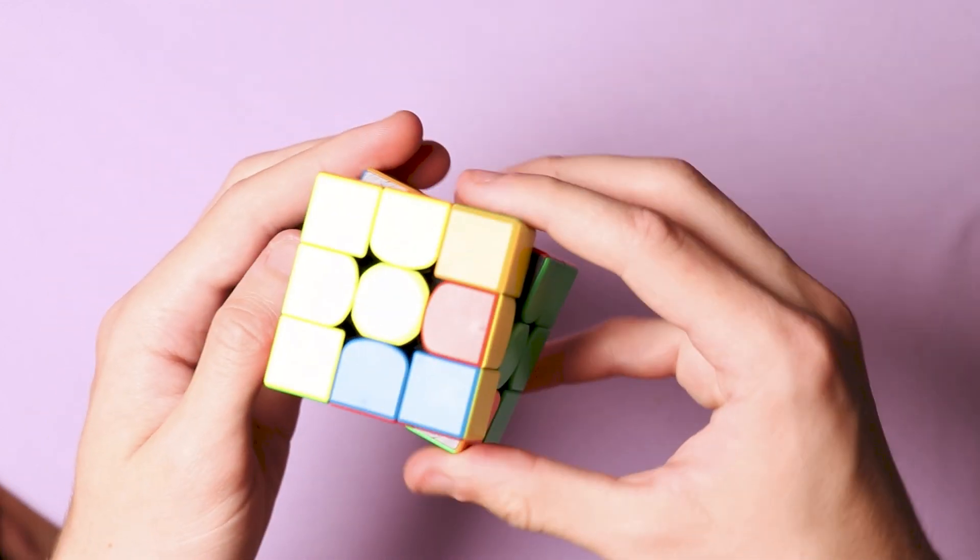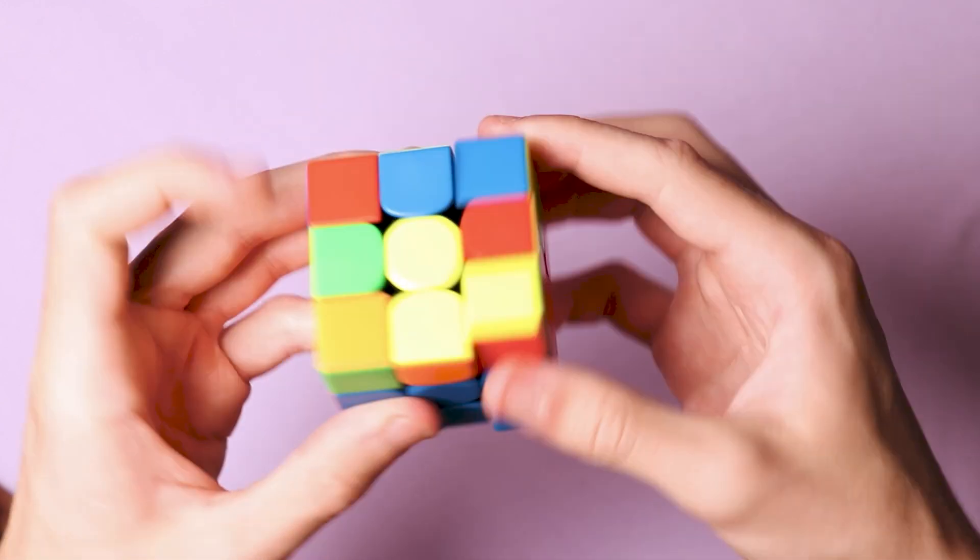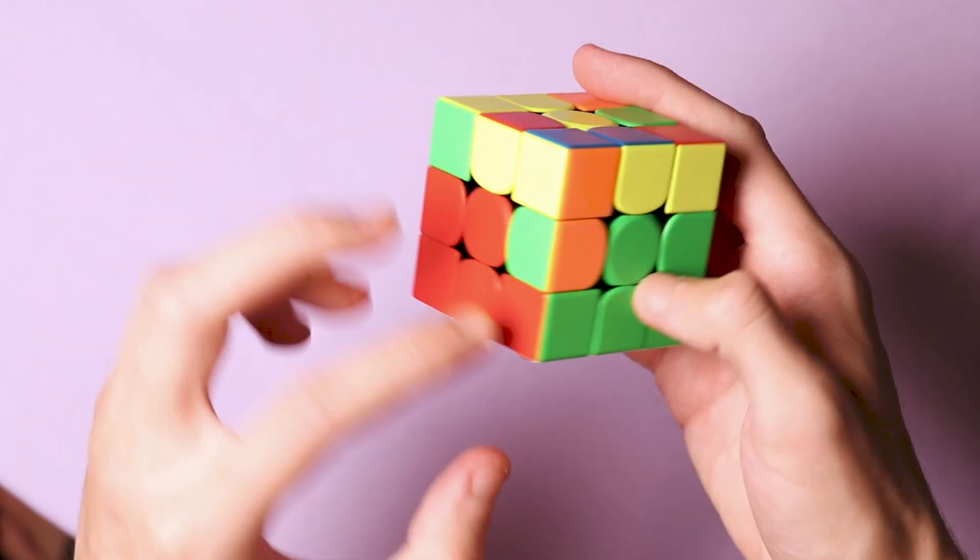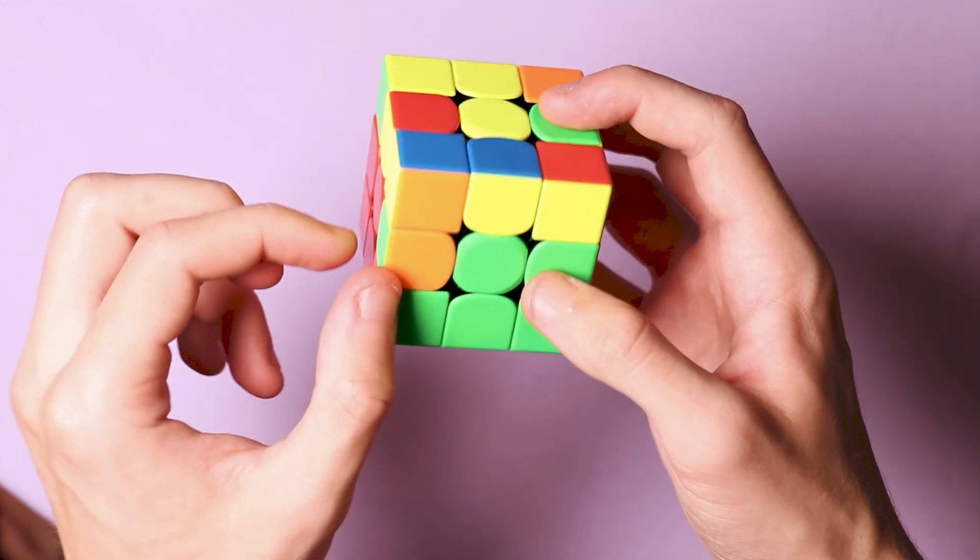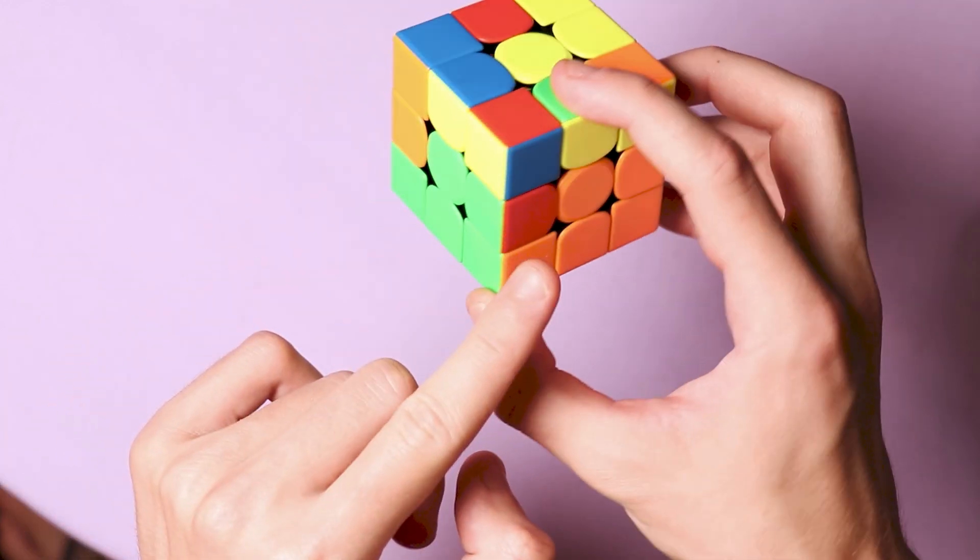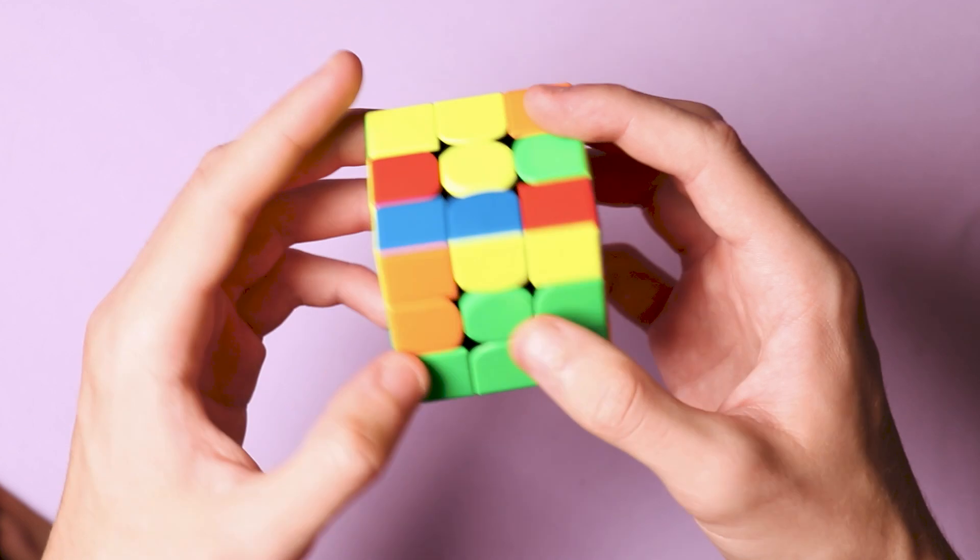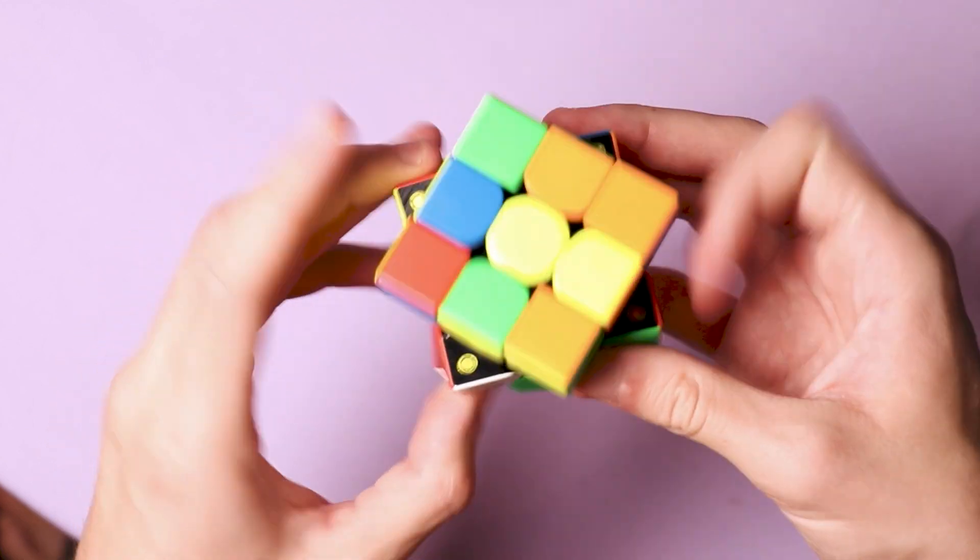I'm gonna do the same with another piece. This here is the same algorithm. And sometimes you're gonna have pieces like this stuck between the center pieces, and if it's an edge that needs to be in another edge from the second layer, you just do the same algorithm and remove it.